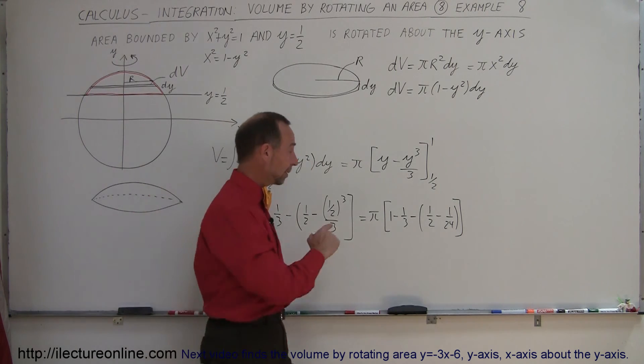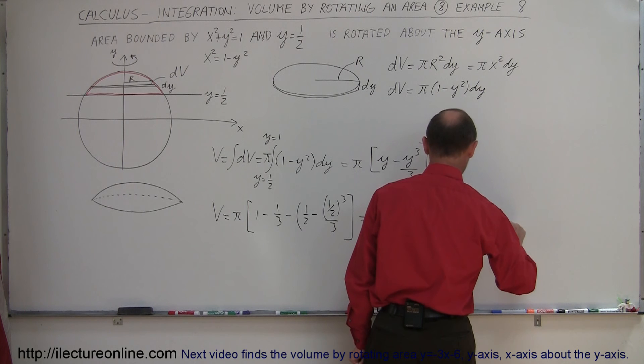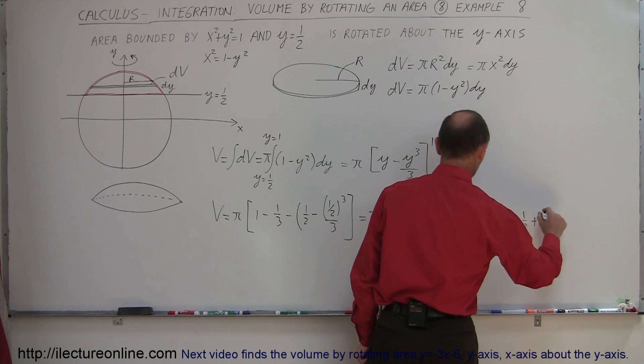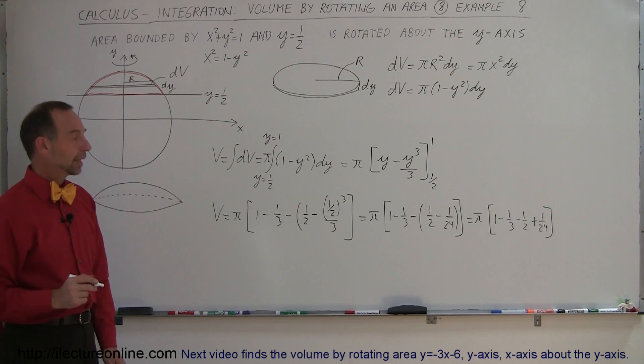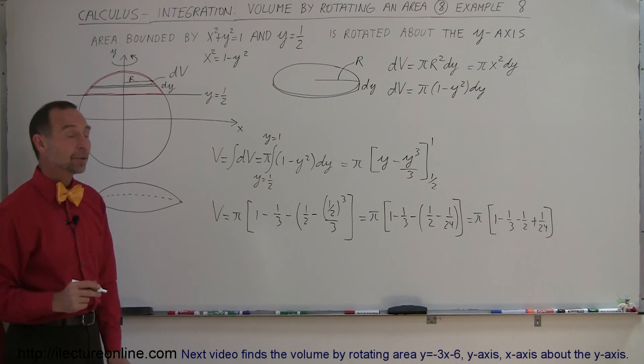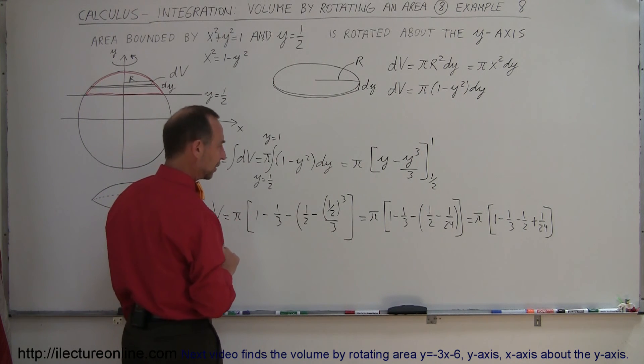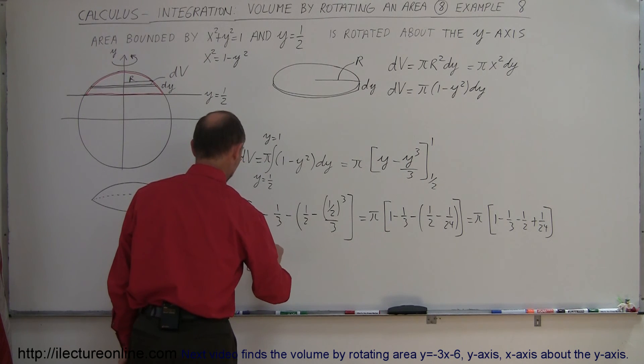Now we can get rid of parentheses by applying the negative sign. This is equal to pi times 1 minus a third minus a half plus 1 over 24. To add all that together, we want to find the common denominator.